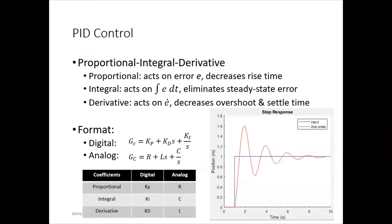PID control is proportional integral derivative. The proportional constant, KP, acts on the error, and it decreases the rise time. So, say this is a step response for a second order system.